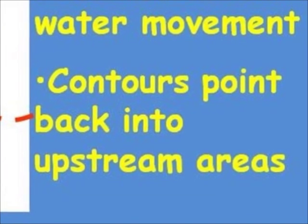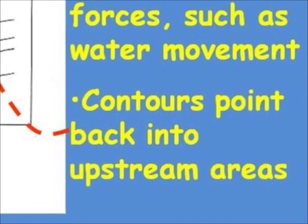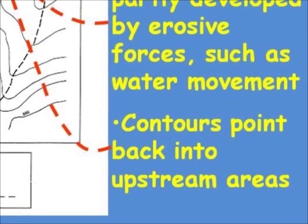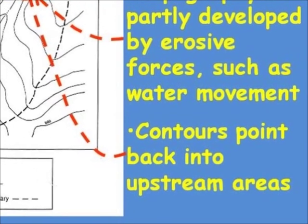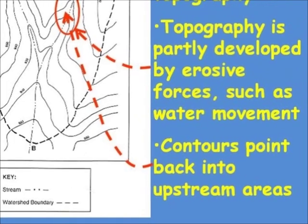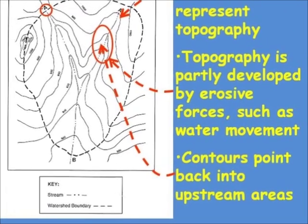Elevation contours represent topography or changes in elevation. One of the most important things to understand is that topography is developed by erosive forces, primarily water movement. And the contours themselves point back into upstream areas that may be contributing to the drainage that we're trying to delineate.